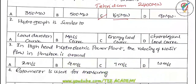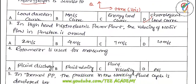Second question: the hydrograph is similar to what? First of all, a hydrograph indicates the rate of flow or discharge versus time. Taking x-axis as time (generally in hours) and y-axis as discharge Q, it is similar to the chronological load curve. So option B/D is the right answer.